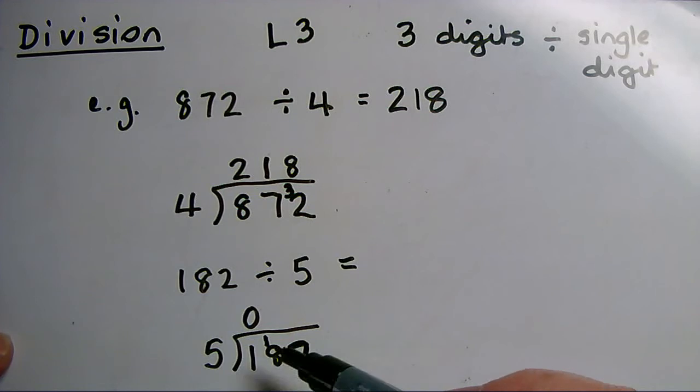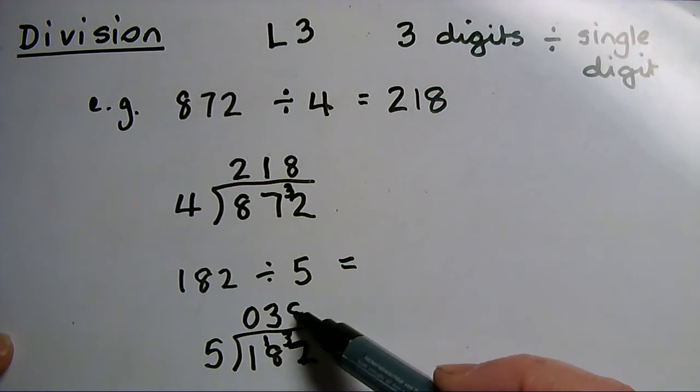How many 5s can I get out of 18? 3 5s of 15, and remainder 3. And then how many 5s in 32? 8.